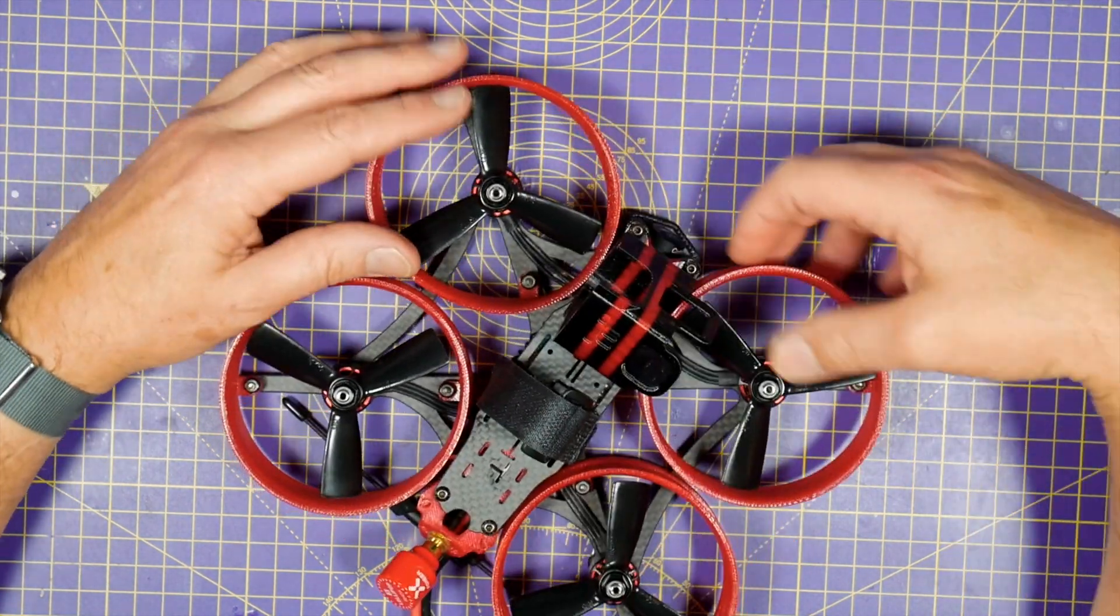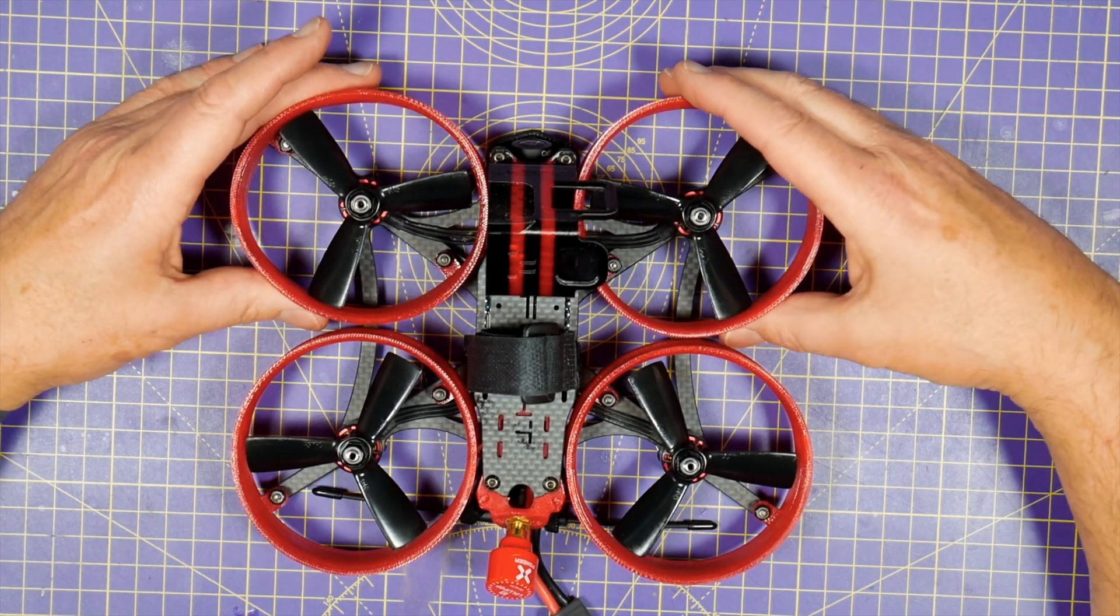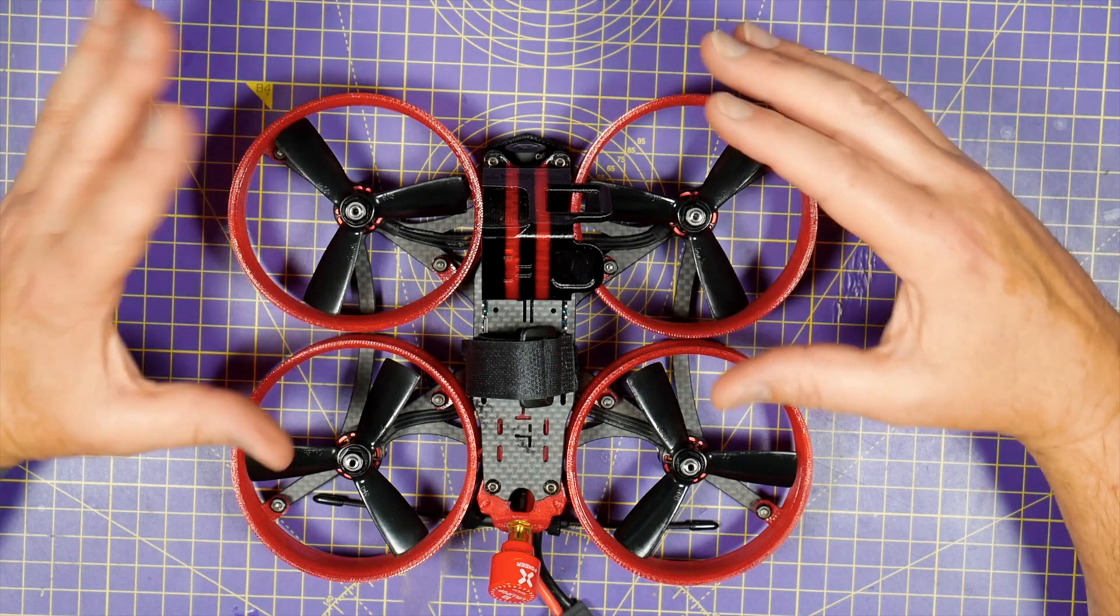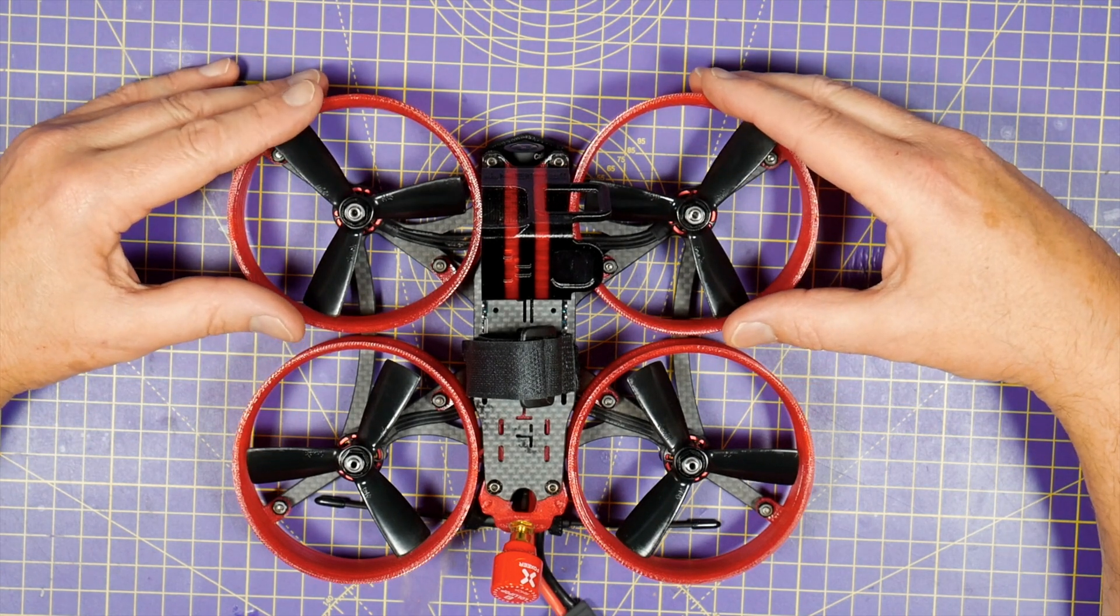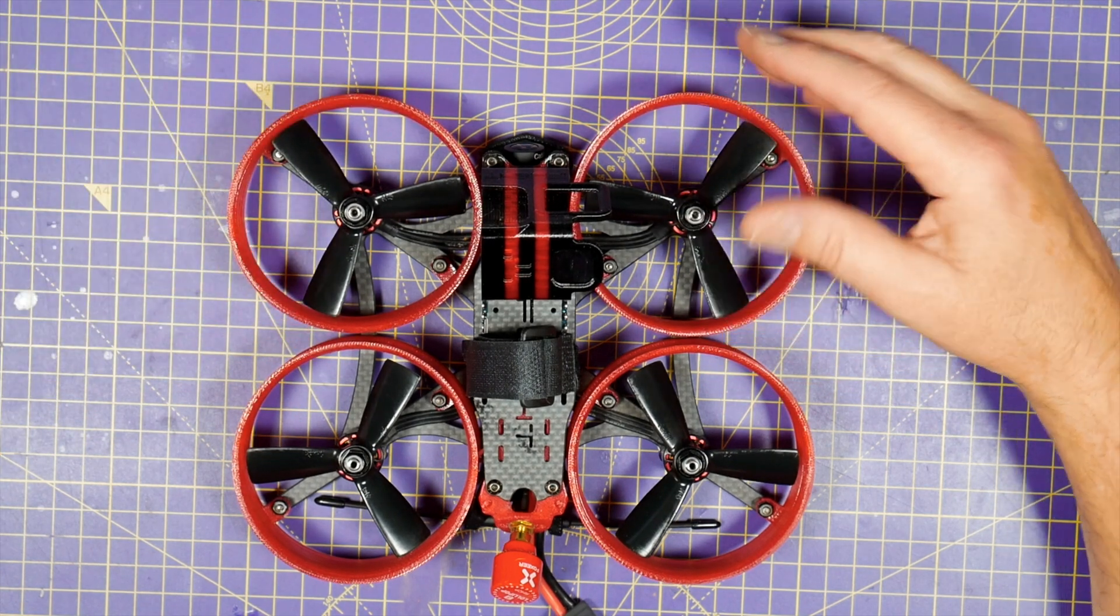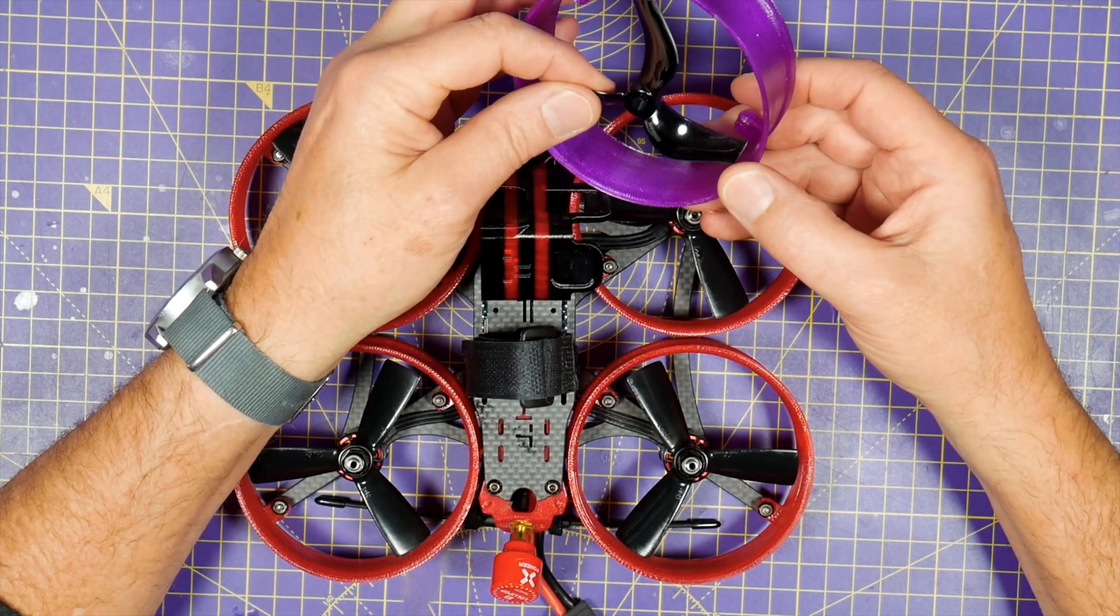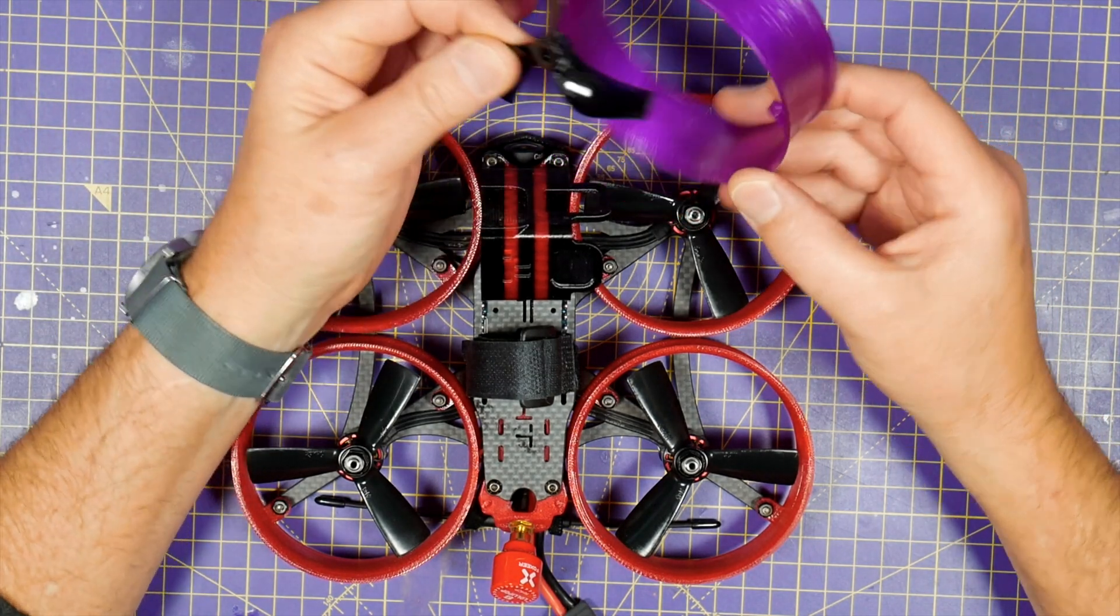So this duct is a little bit smaller and a tighter fit on the standard 3045 props which will give it a little bit more thrust. And these are designed to fit the Gemfan 75mm tri-blade props. And again they're a snug fit.